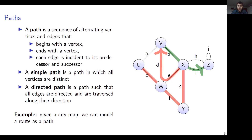Paths are sequences of alternating vertices and edges, where each consecutive vertex-edge pair must be adjacent. For example, the red line here is a path, and the green line is also a path. A simple path is a path where all vertices are distinct. The red path is not simple because it goes through W twice, while the green path is simple because it visits no node more than once.